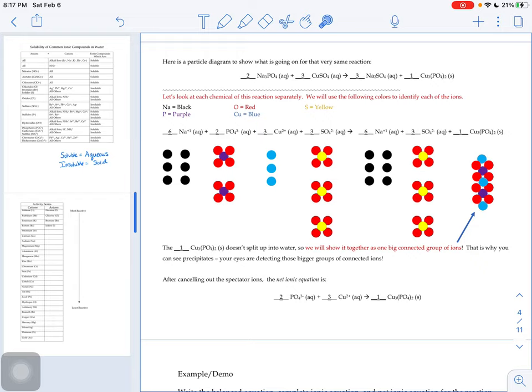So below that complete ionic equation, you can see that I've color coded these dots to represent different elements, different ions, I should say. Our black dots are going to represent sodium ions, our purple ones are going to represent parts of that phosphate ion, the phosphorus part of our phosphate ion. Our O is going to represent parts of our sulfate and phosphate. The blue is our copper and S is sulfur.